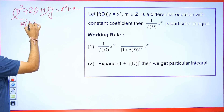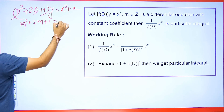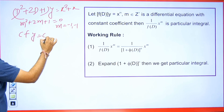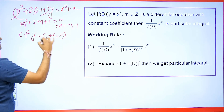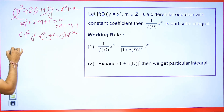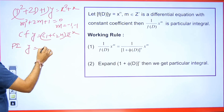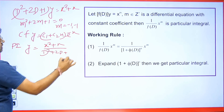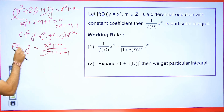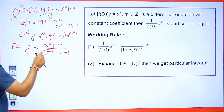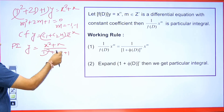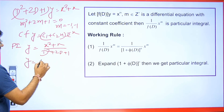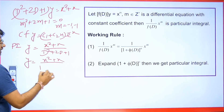Let's first get a basic idea about the CF. We will solve it and the value of m will be minus 1 and minus 1. So the CF will be c1 plus c2 x, e to the power minus x. Then we will calculate the PI. We write x square plus x in the numerator and D square plus 2D plus 1 in the denominator. In this case, we take out the constant term common — it is 1 — so we take 1 common and get x square plus x over 1 plus D square plus 2D.